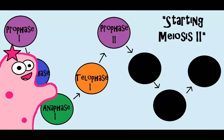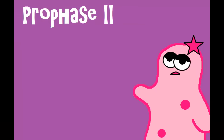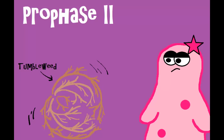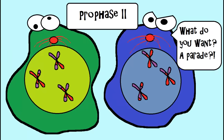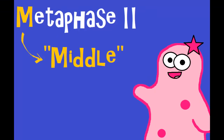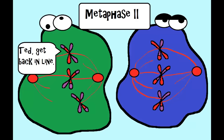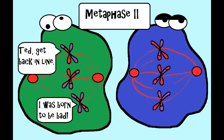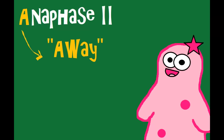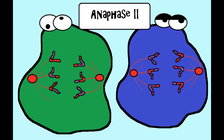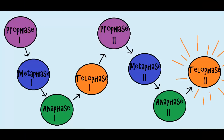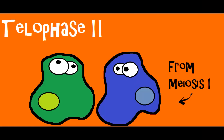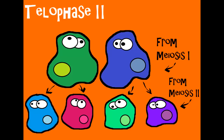The first step in meiosis two is prophase two — we're not doing interphase again, as it only happens once. Prophase two is not as eventful as prophase one: there are no homologous pairs and no crossing over. The chromosomes and spindle start to form. In metaphase two, the chromosomes line up in the middle in a single-file line — very similar to mitosis, not in pairs. In anaphase two, the chromatids are pulled apart to opposite sides of the cell. In telophase two, the two cells both divide, giving us four cells total.